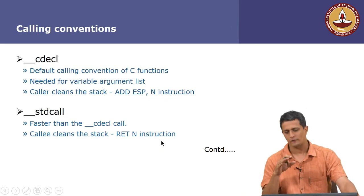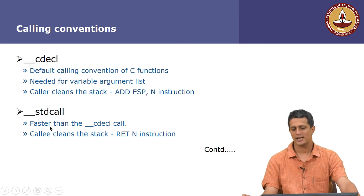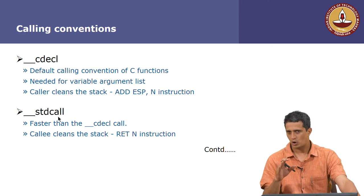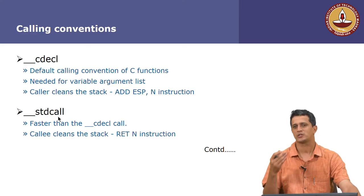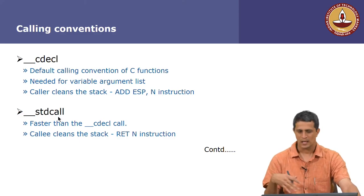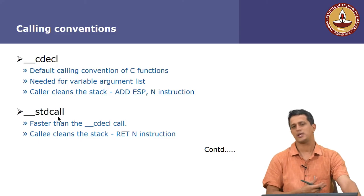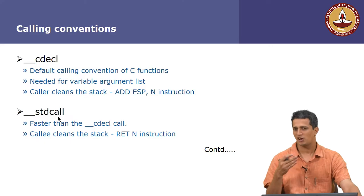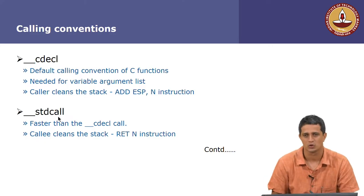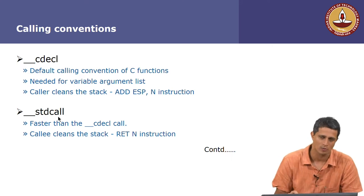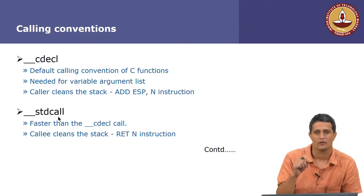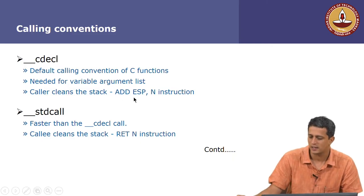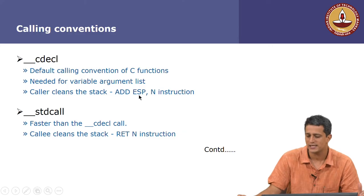We discussed two different calling conventions. The __stdcall is the standard call, which is faster, and this is where the RETN instruction is executed — the function knows exactly how many parameters there are. For functions like printf where parameters are variable and determined only at runtime, it is the calling function that knows how many parameters are pushed onto the stack. Therefore, you can only undo this effect in the calling function using the ADD ESP, N instruction.